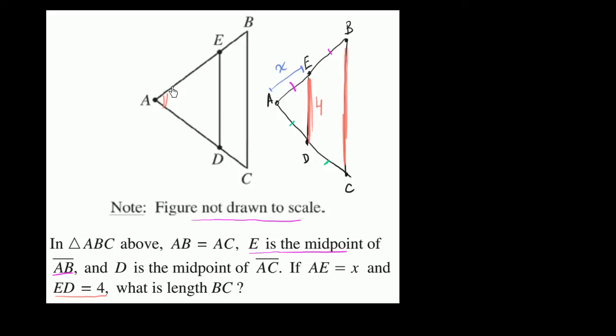So triangle AED is similar to triangle ABC. Let me write this down. Triangle AED is similar to triangle ABC. And what that tells us is the ratio between corresponding sides is going to be the same. BC is the corresponding side on the larger triangle ABC to side ED on the smaller triangle AED.